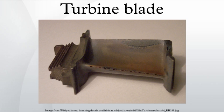Most turbine blades are manufactured by investment casting. This process involves making a precise negative die of the blade shape that is filled with wax to form the blade shape. If the blade is hollow, a ceramic core in the shape of the passage is inserted into the middle. The wax blade is coated with a heat-resistant material to make a shell, and then that shell is filled with the blade alloy.